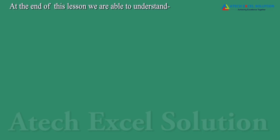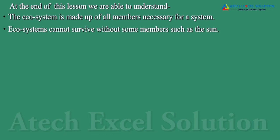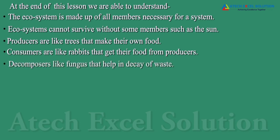At the end of this lesson, we are able to understand: the ecosystem is made up of all members necessary for a system. Ecosystems cannot survive without some members such as the sun. Producers are like trees that make their own food. Consumers are like rabbits that get their food from producers. Decomposers, like fungus, help in decay of waste.